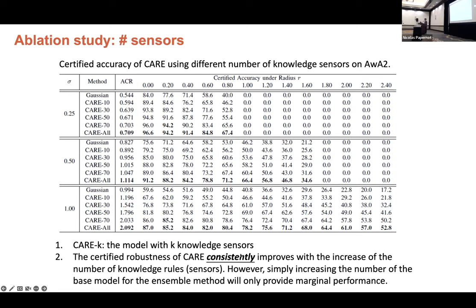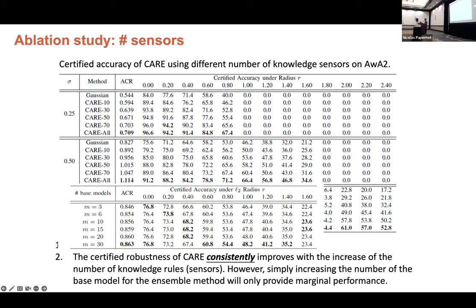And this is the difference with ensemble method since for ensemble methods, like I show here, if even if you increase the number of the base model from three to 30, the certified accuracy of the ensemble only increased about 1%. So this is just a difference between our method and ensemble method. There is a clear bottleneck for the ensemble method.